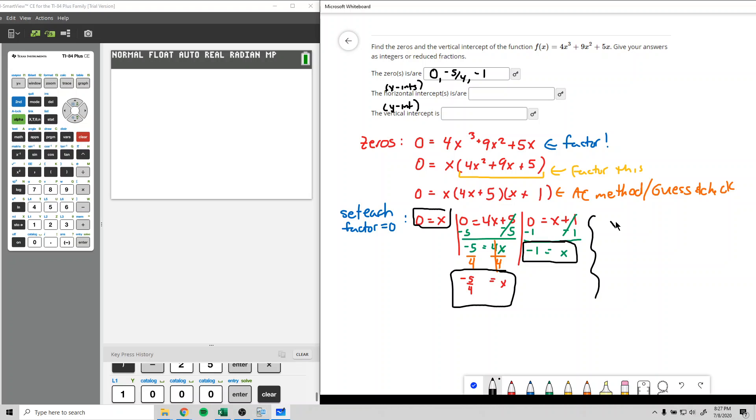And so the x-intercepts, or the horizontal intercepts, we've got x is 0 and then y is 0. Then for the middle one here, x is negative 5 fourths and y is 0. And then in the last one, x is negative 1 and y is 0. So these are our three intercepts.